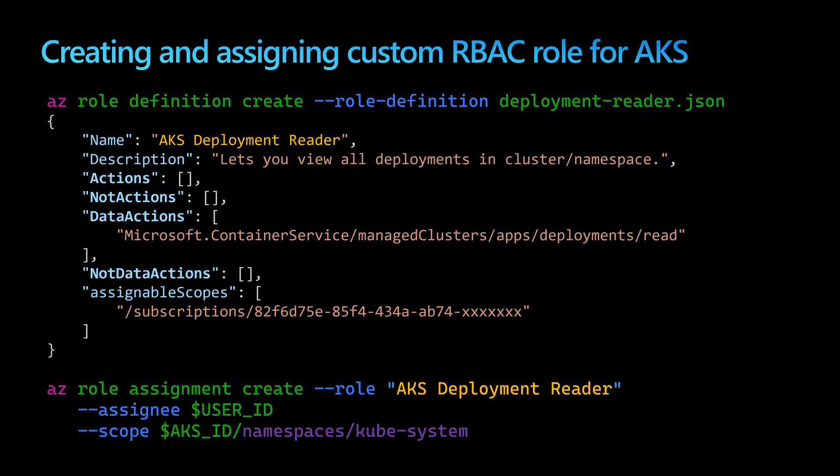Since we have those built-in predefined RBAC roles, we can also create our own custom RBAC role. Here I have an example: this JSON file will be called the AKS Deployment Reader, and as the name suggests, this role will be able to read the Kubernetes deployment objects of my cluster. Within data actions, we assign it the permission for kubernetes/apps/deployments/read, meaning it can run commands like kubectl get deployments. We can also define assignable scopes to limit this role to only one subscription, for example.